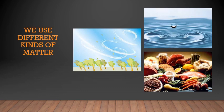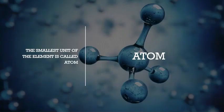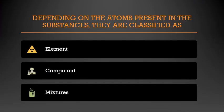Molecules can be single molecules or compound molecules. Compound molecules means two or more molecules together. When these compound molecules are subdivided, elements are obtained. The smallest unit of an element is an atom. Atom is the smallest unit of the element having the same properties.